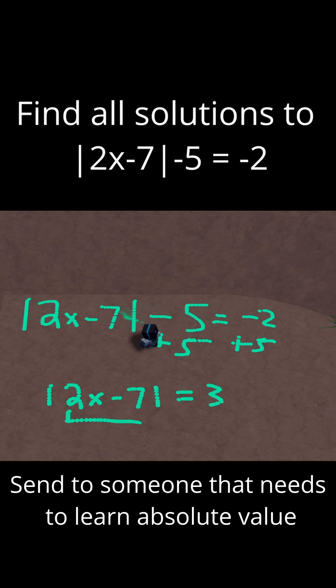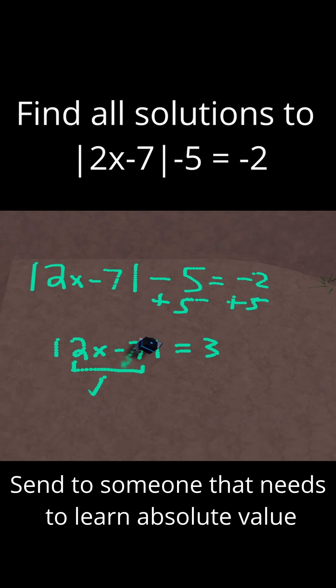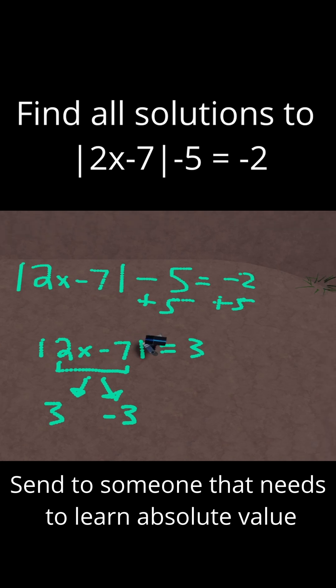So now think about it. This whole quantity of 2x minus 7, it could either be 3, because the absolute value of 3 is just 3, or it also could be negative 3. Because if you put negative 3 into absolute value, it becomes positive 3, which would satisfy this equation. So I'm going to set 2x minus 7 equal to both 3 and minus 3 and solve those separately.